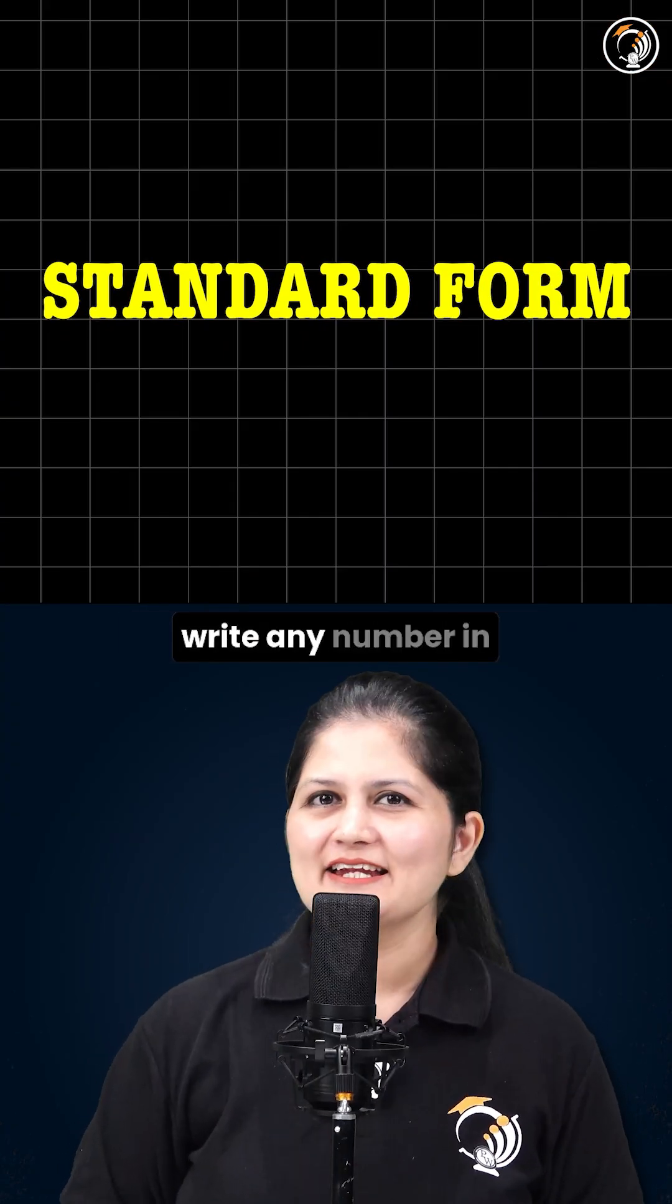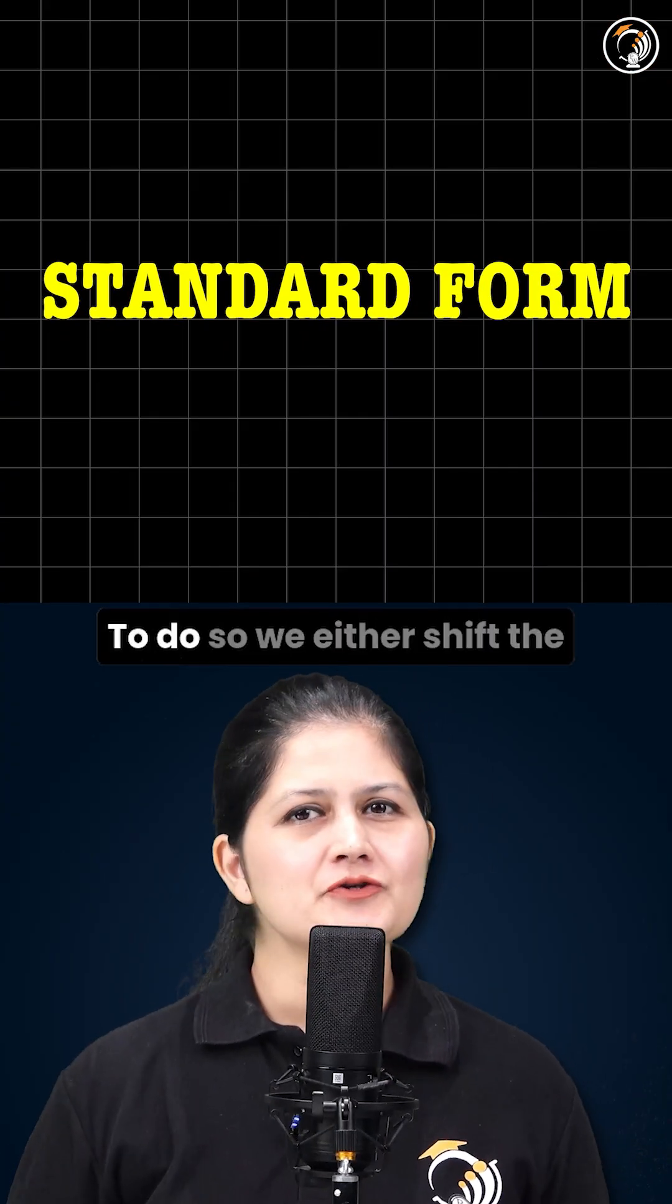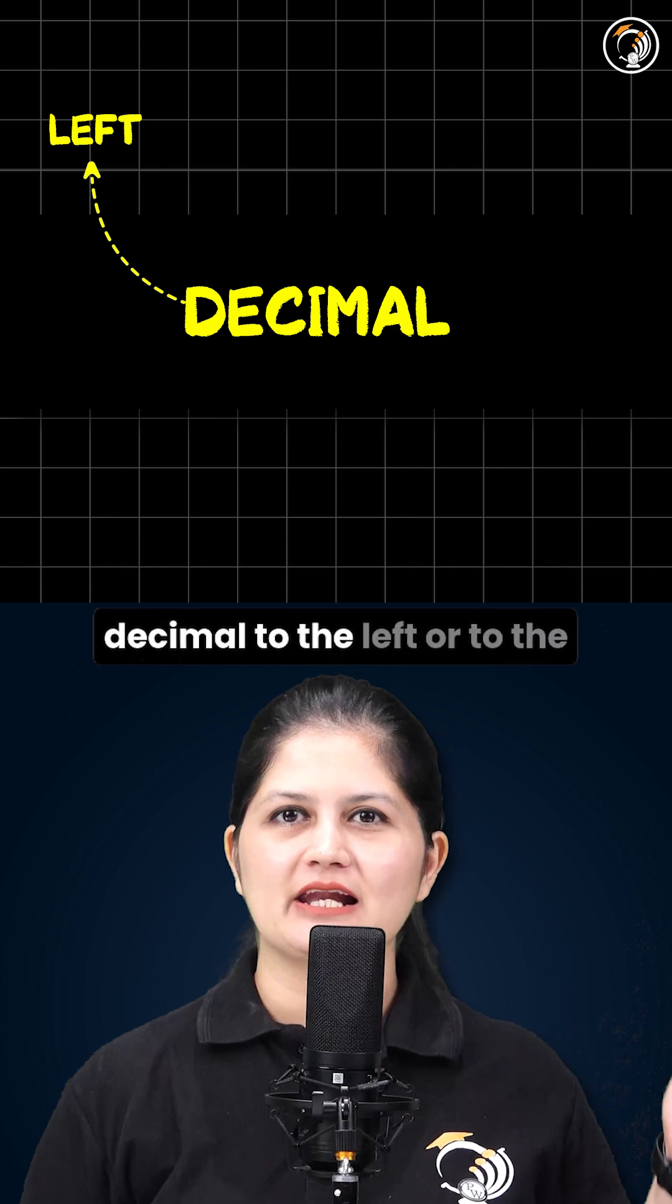Let's learn a trick on how to write any number in the standard form. To do so, we either shift the decimal to the left or to the right.